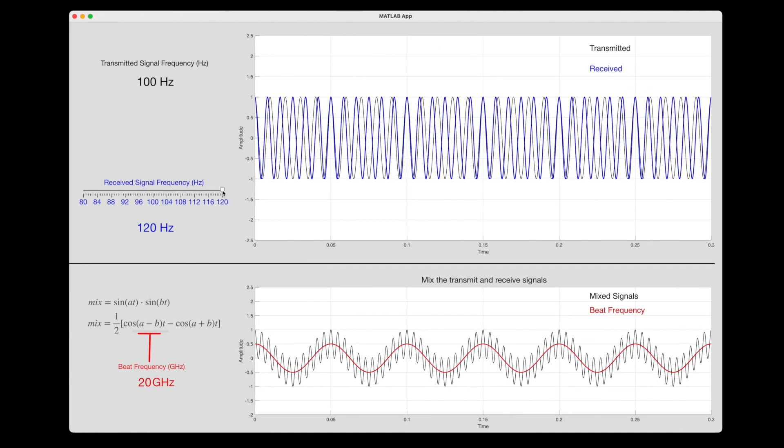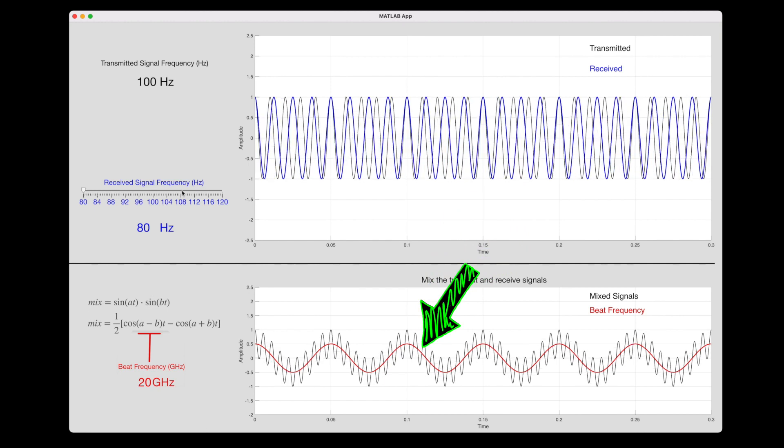If you recall with FMCW radar, we used that very slight frequency shift to create a beat frequency, and from that we were able to determine velocity.